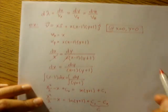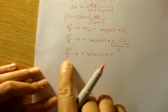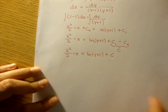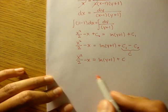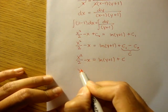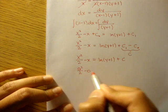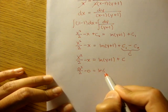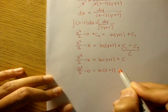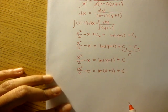So we'll plug in x equals 0, y equals 0 down here to find what our c is. So we'll just plug that in. 0 squared over 2 minus 0 is equal to ln of 0 plus 1 plus c.